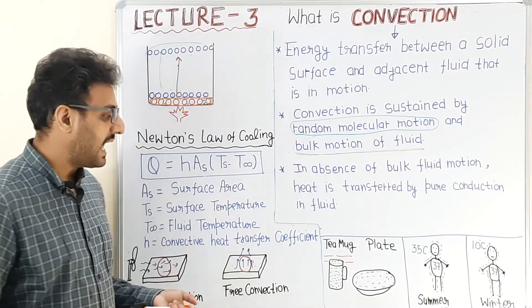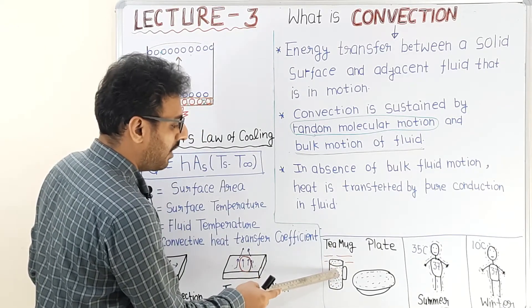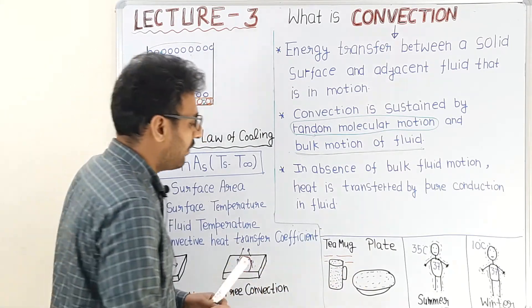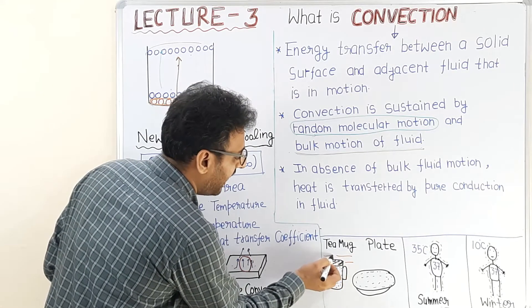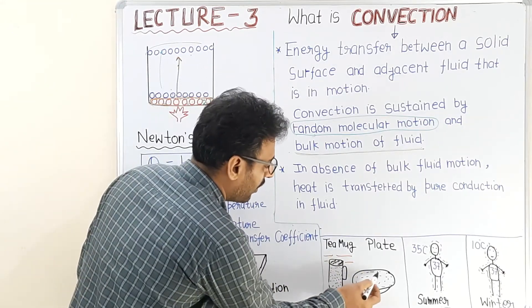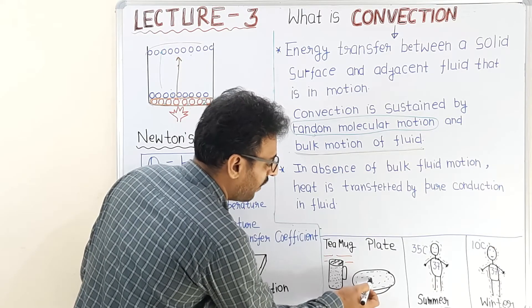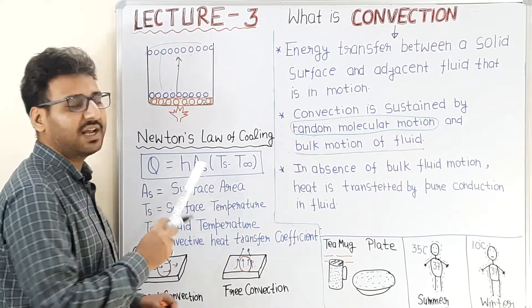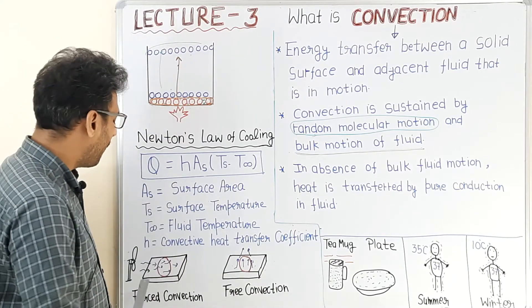This formula also shows that heat transfer rate is proportional to the surface area. From daily life, if we want to cool tea in a mug faster, we pour it into a plate. Initially the area of tea exposed to cooling air is less; when poured into a plate, the contact surface area between the tea and air increases, and in this way heat transfer rate increases.